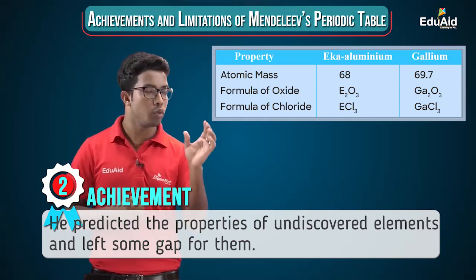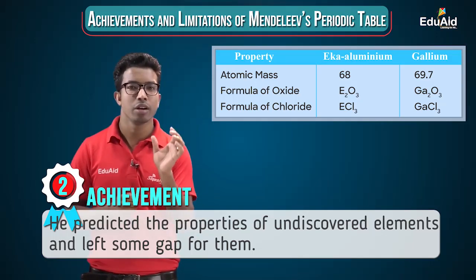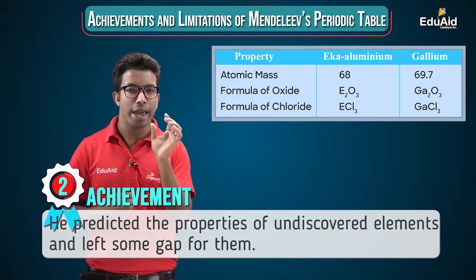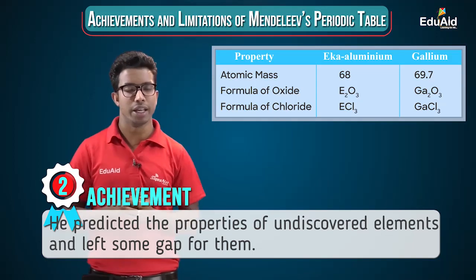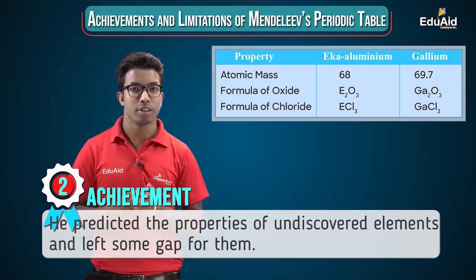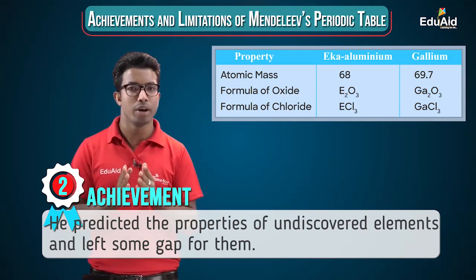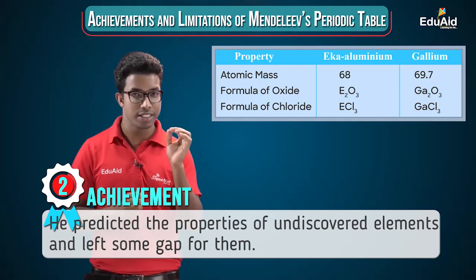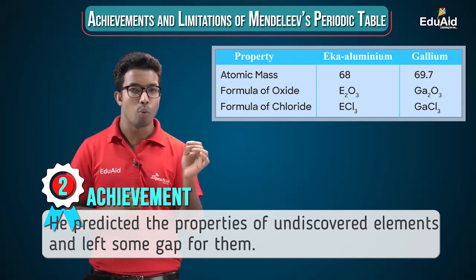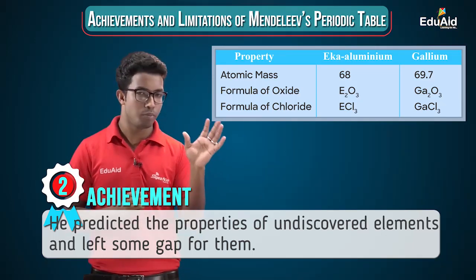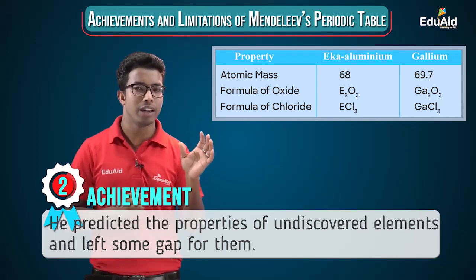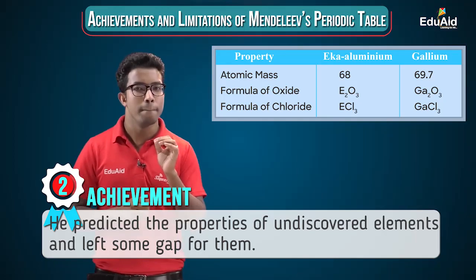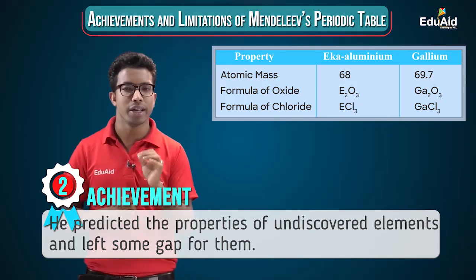When gallium was discovered, its atomic mass was found to be 69.7 — quite close to 68 — and its oxide formula is Ga₂O₃ and its chloride formula is GaCl₃, closely matching Mendeleev's predictions. This bold move by Mendeleev was a definite success and is considered the biggest achievement of Mendeleev's periodic table.